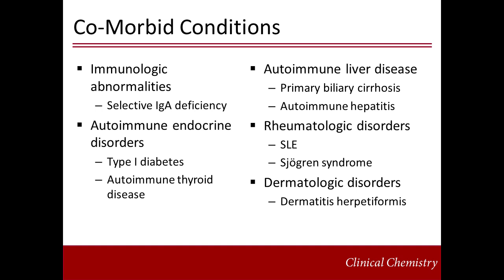Celiac disease is also associated with several other autoimmune endocrine diseases, such as Type 1 diabetes. This association is quite significant, and in some practices, newly diagnosed Type 1 diabetics are screened for possible Celiac disease. Celiac disease may also be found in individuals with autoimmune liver and certain systemic rheumatic diseases. Lastly, the dermatologic disorder Dermatitis Herpetiformis occurs frequently in patients with Celiac disease, and is associated with one of the same autoantibodies implicated in the pathogenesis of Celiac disease.